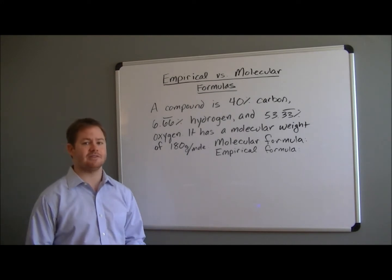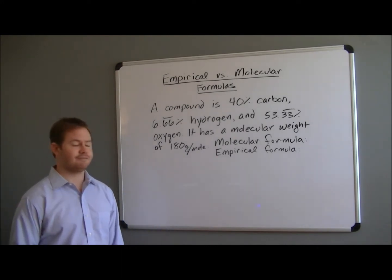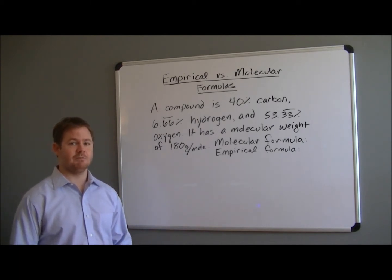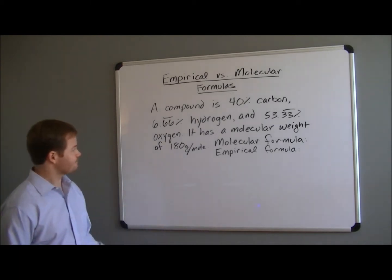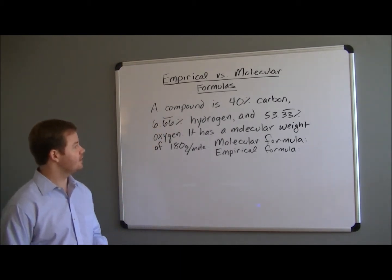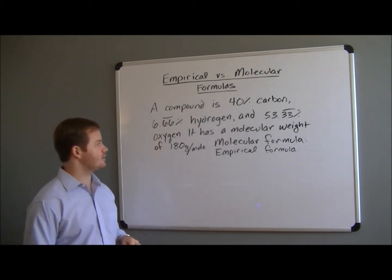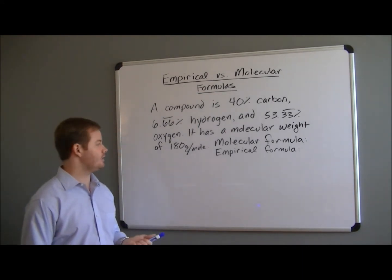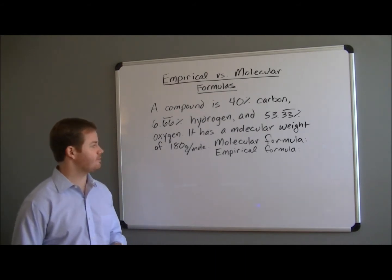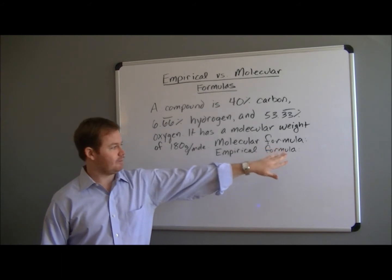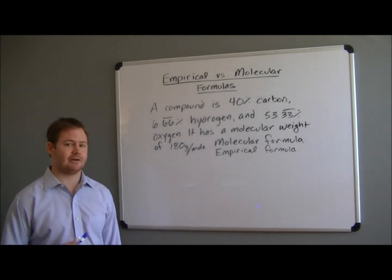A little bit later we're going to talk about the difference between those two, but first let's take a look at this problem and make sure we get the right setup in place before we go and do any calculations. So here it says a compound is 40% carbon, 6.66% hydrogen, and 53.33% oxygen. It has a molecular weight of 180 grams per mole. Now we have to find the molecular formula and the empirical formula for a compound like this.